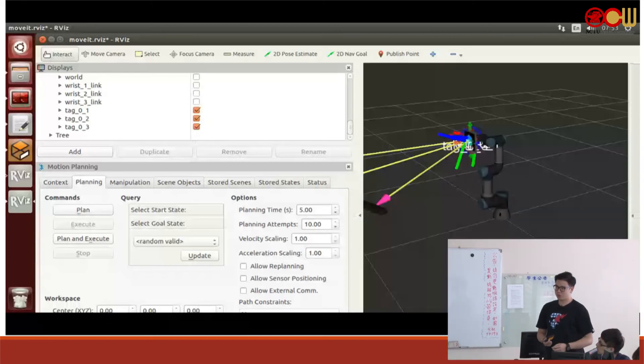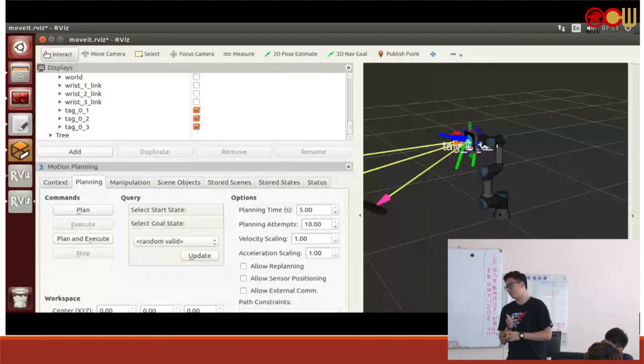We're doing this because with AprilTag detections, we can't really find the accurate position. We still have some errors, but using the intersect point, we can actually calculate the accurate position in Gazebo, not in the real scenario. So that is our presentation.